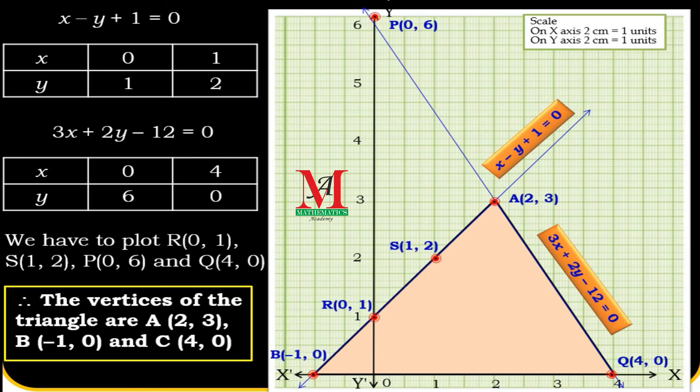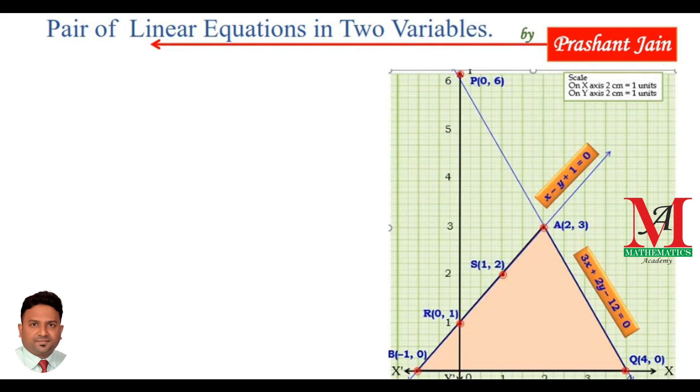A is (2,3), B is (-1,0), and Q is (4,0). We can also name it as C(4,0). Now, it's time to find the area of the triangle.